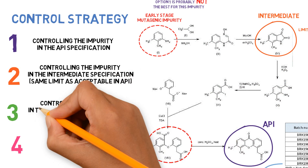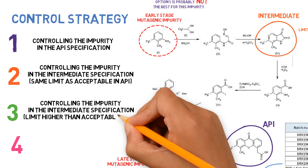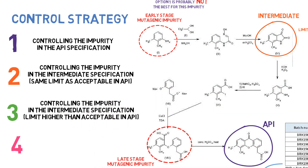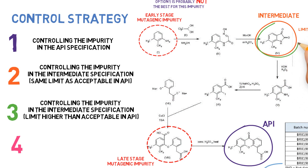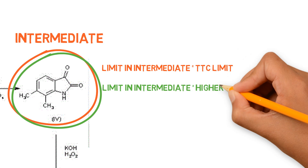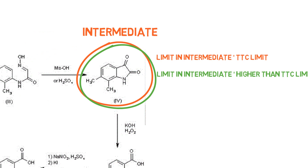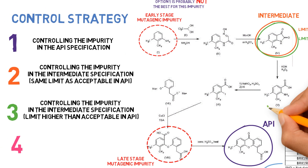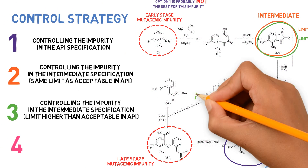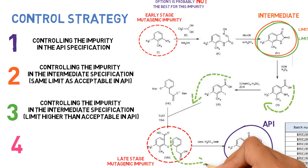Option 3: Controlling the mutagenic impurity in an intermediate specification with a limit higher than the acceptable limit in the API. This case is similar to Option 2. However, the limit for the impurity in the intermediate stage can be established as higher than the permitted limit in the API, as long as it is guaranteed that the stages separating that intermediate from the API will be able to purge and eliminate the impurity to levels well below the acceptable limit. This can be shown through the purge factor calculation or spike and purge studies.